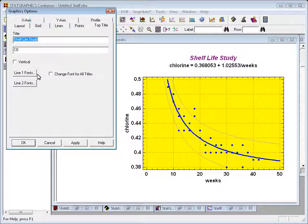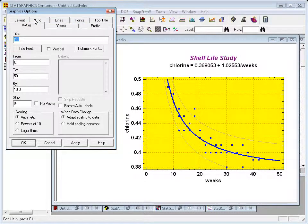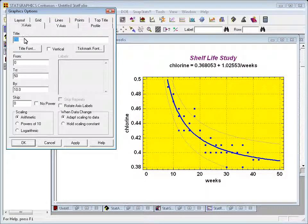As far as the x-axis is concerned, if we click on that tab, right now it's labeled weeks. That was automatic. I think I'll make it a little bit more informative. This is the age in weeks of the product.